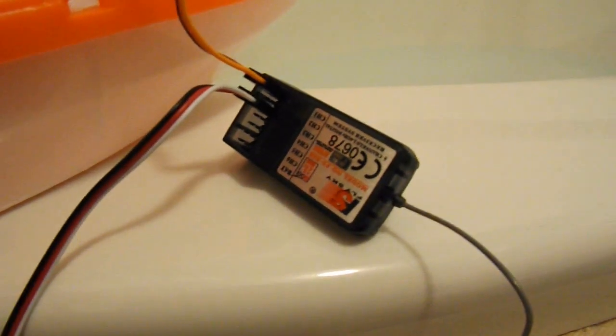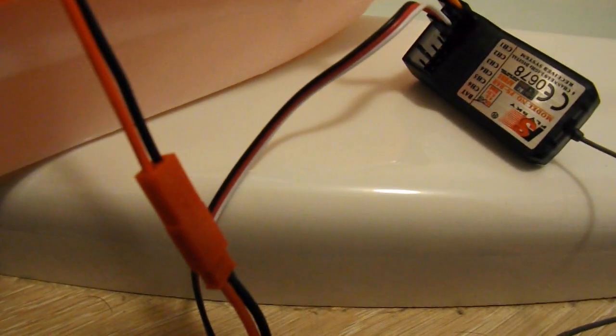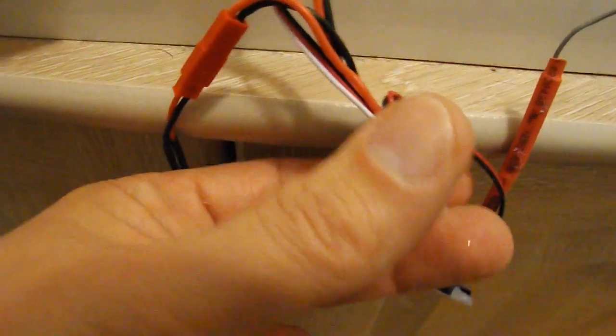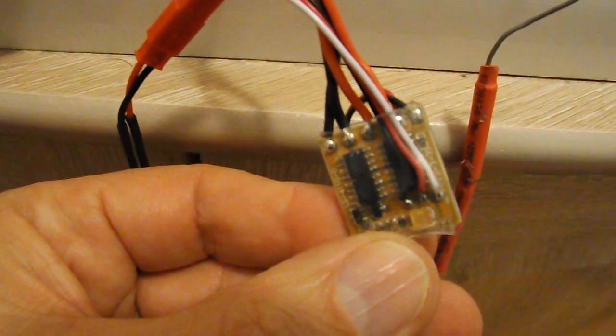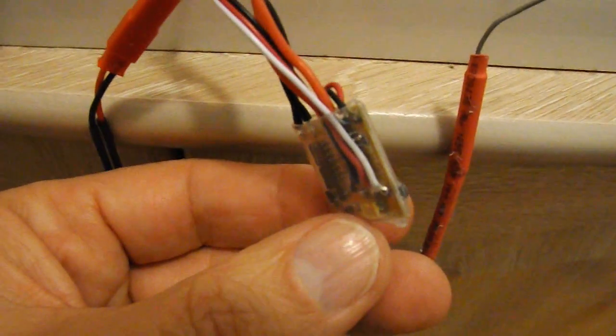And then we've got the receiver, which obviously is wired into the servo. And then the other wire coming from the receiver is going to the ESC. That one actually gives us forwards and backwards, which is a bit of a waste of time, because we can't suck the water, we can only blow it.